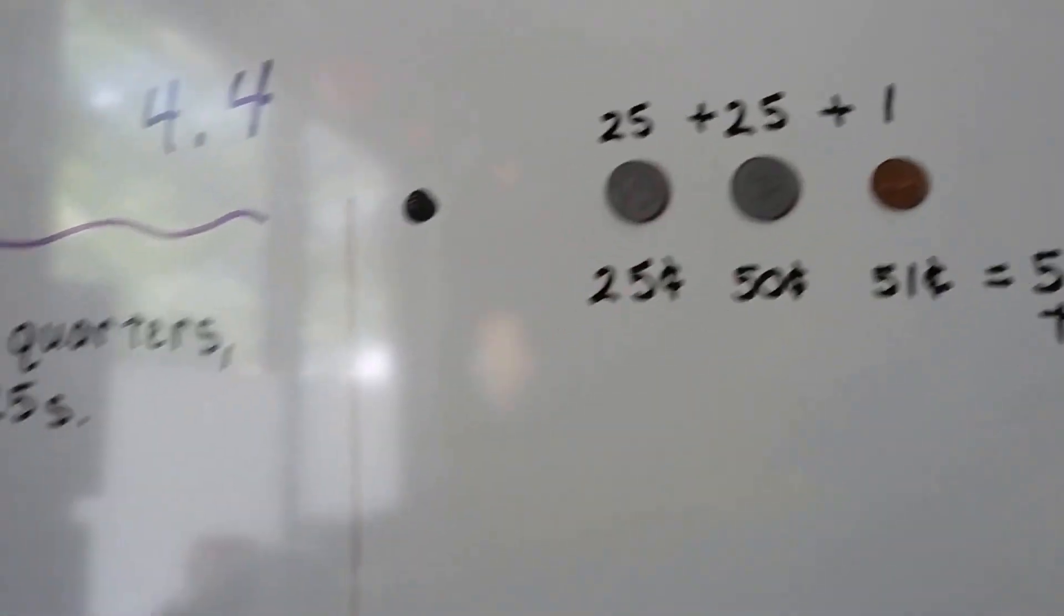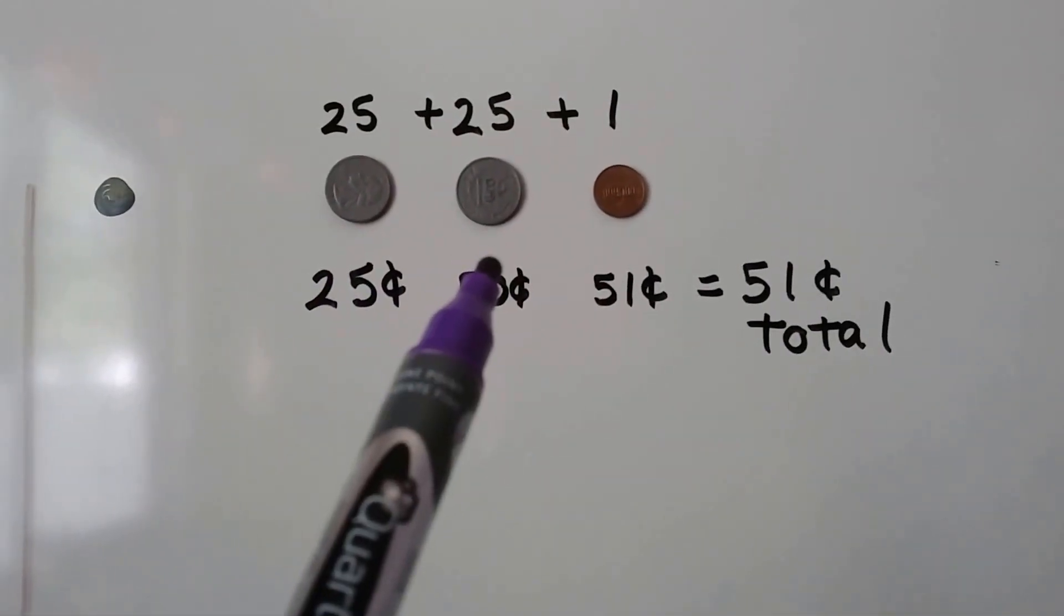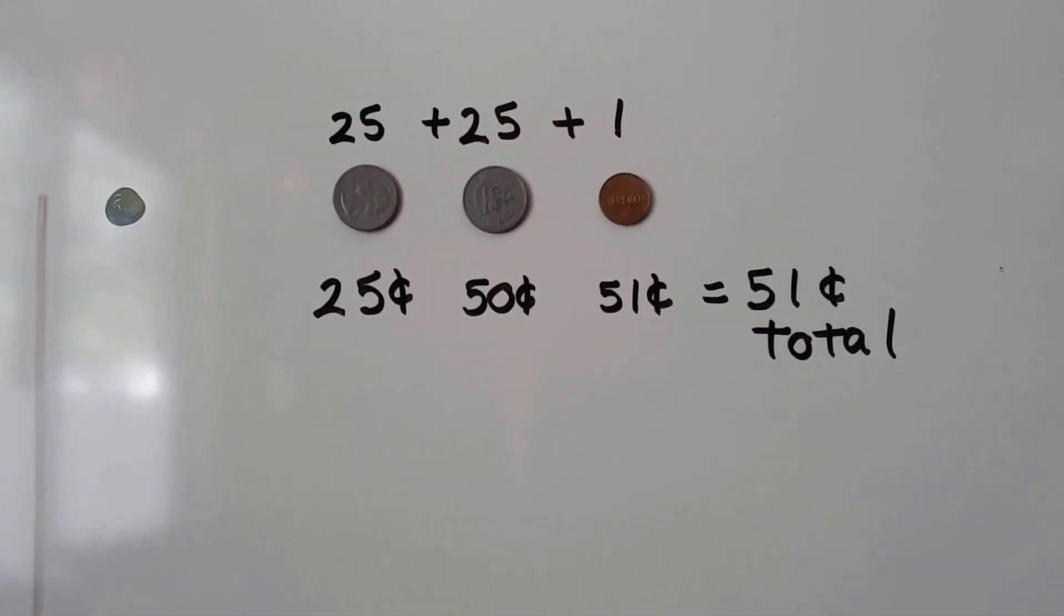We add another quarter. That's 50. Because remember, it says 25, 50, 75. So if we have two of them, it's 50. So we have 25, 50, and we add one more. We have 51 cents total.